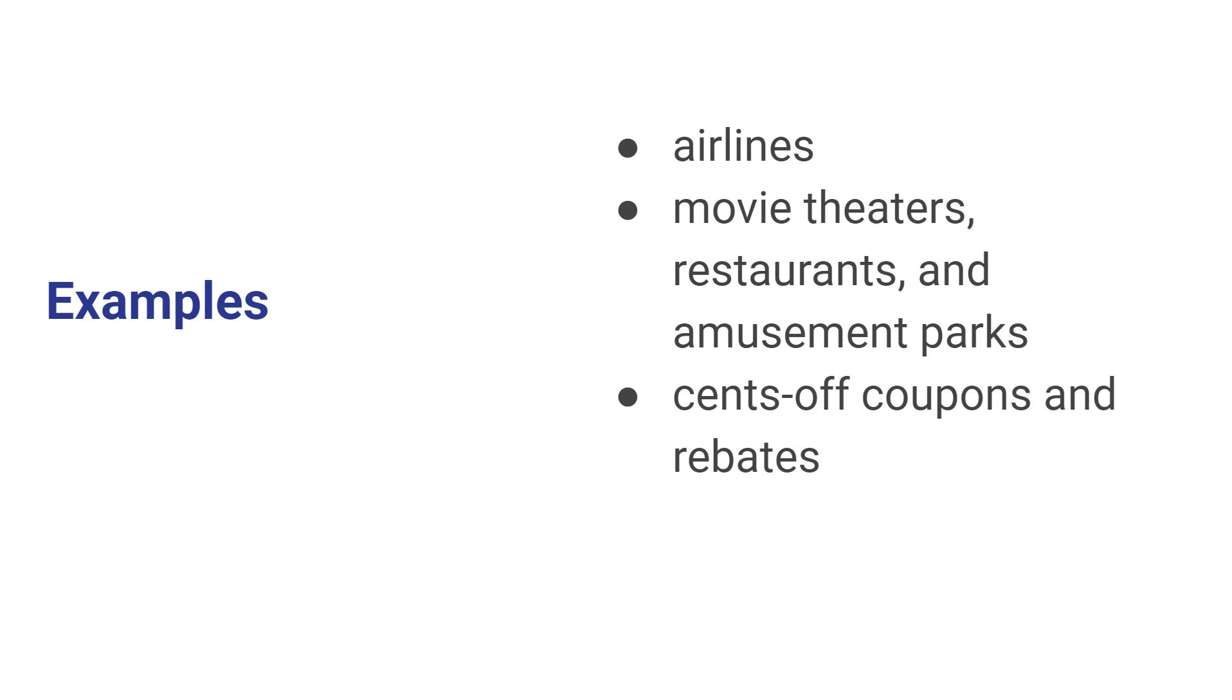Another simple way in which this is done is with those cents-off coupons you may get in the mail. Or if you still happen to have Sunday newspapers, that show up in the newspapers as well. And what happens there is people with relatively high incomes generally don't spend a lot of time saving coupons to save 25 cents off of a tube of toothpaste.